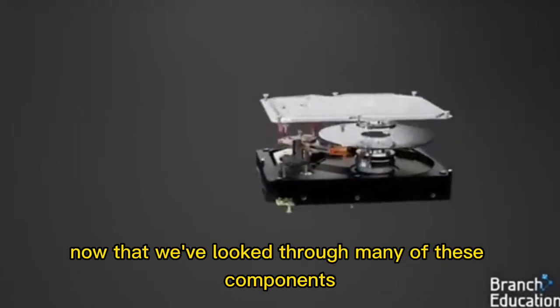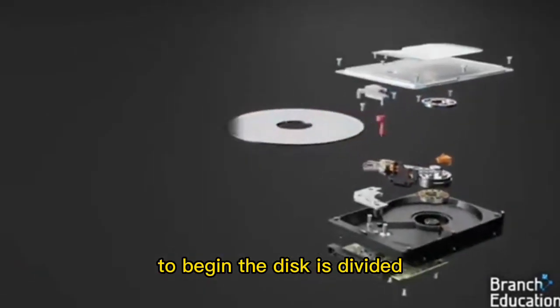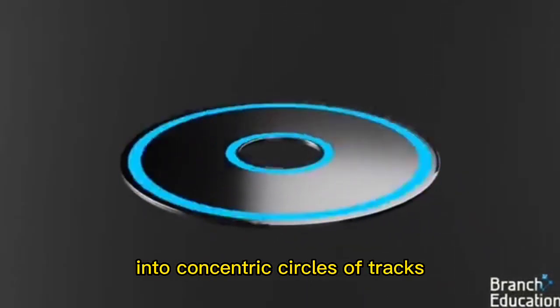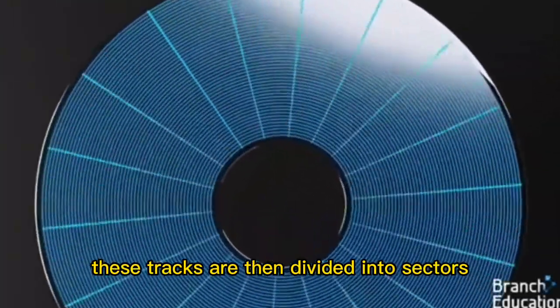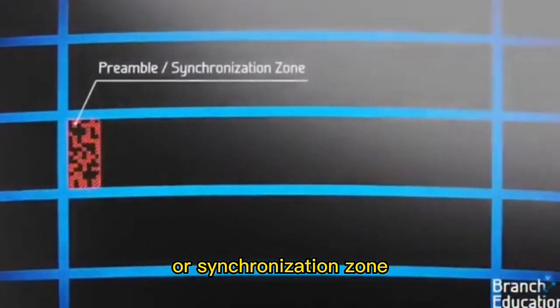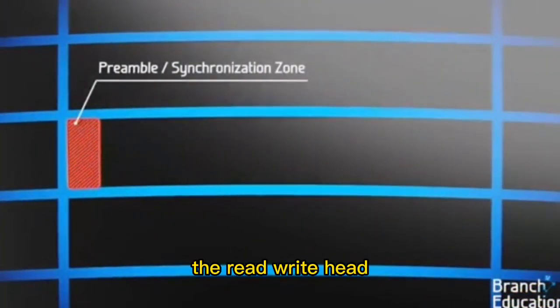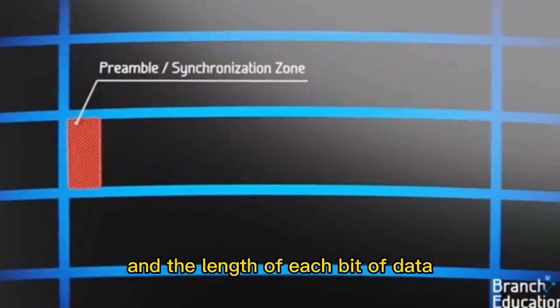Now that we've looked through many of these components, let's see how they work. To begin, the disk is divided into concentric circles of tracks. These tracks are then divided into sectors, and in each sector is a preamble or synchronization zone, which tells the read write head the exact speed of the spinning disk and the length of each bit of data.